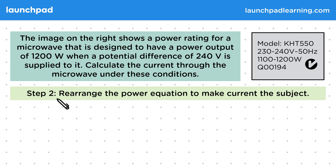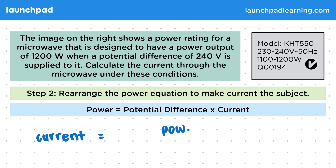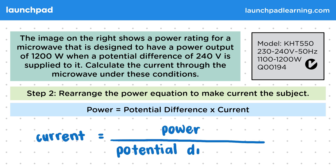For step two, let's rearrange the power equation to make current the subject. We can do that by dividing both sides of the equation by the potential difference, which gives us: current is equal to the power divided by the potential difference.